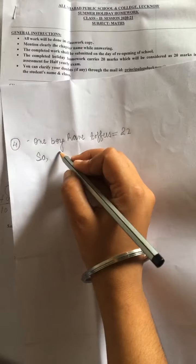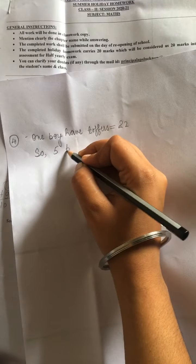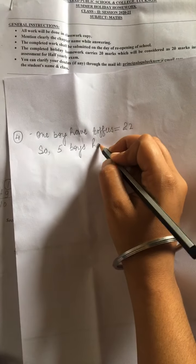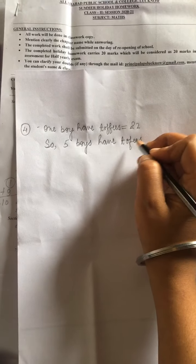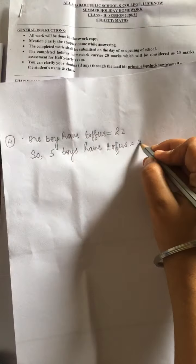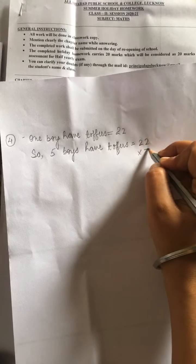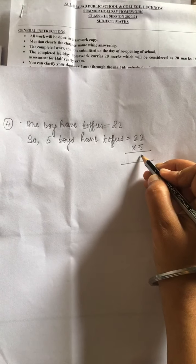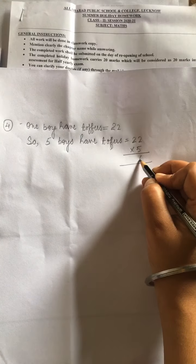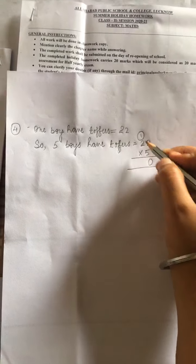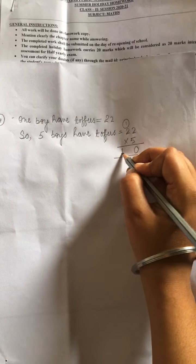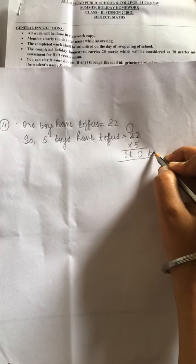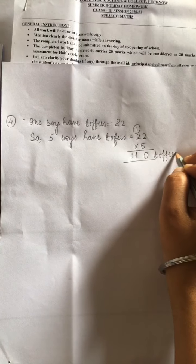22 into 5. 5 times 2 is 10 ka 0, and 1 carry. 5 times 2 is 10, 10 plus 1, 11. So 5 boys ke paas kitni toffees honge? 110.